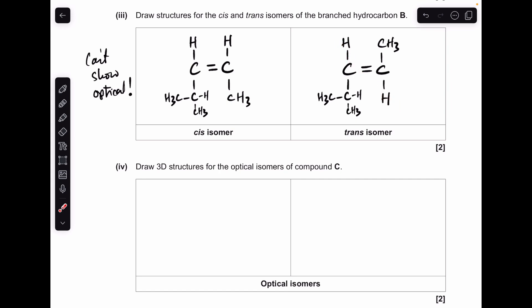It can't show optical, which means that we can't have a chiral centre. So you can see on this carbon here, I've got two identical groups, two methyl groups. So we haven't got four different groups on this carbon, and so therefore it can't show optical.